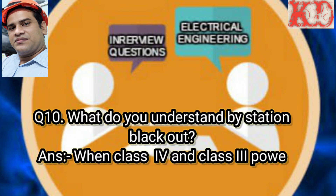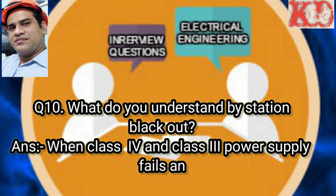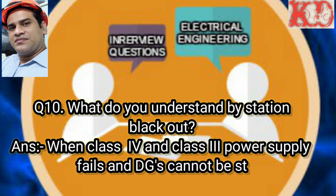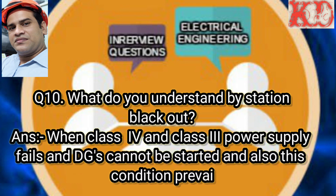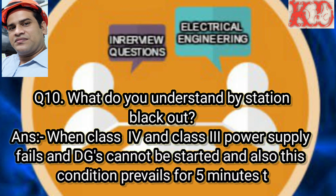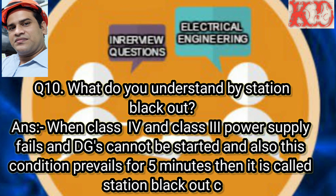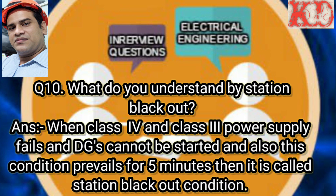Question number 10: What do you understand by a station blackout? Answer: When class 4 and class 3 power supply fails and diesel generators cannot be started, and this condition prevails for five minutes, then it is called a station blackout condition.